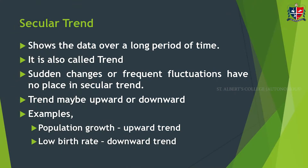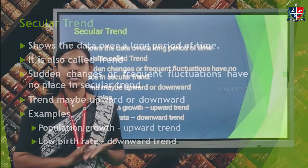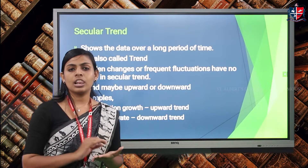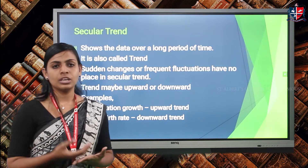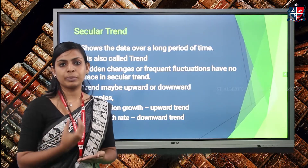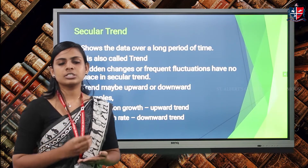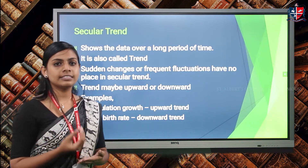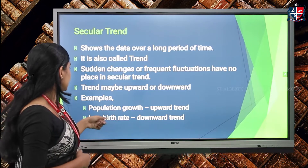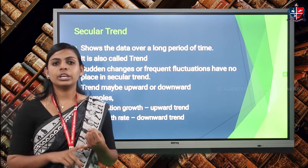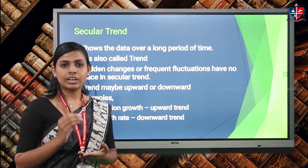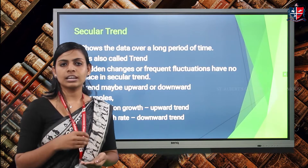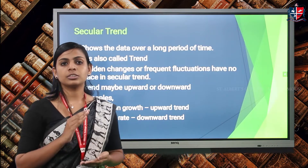The first component is secular trend, also known as long-term trend. Secular trend is measured over a long period of time — over a period of ten years, five years, or even more. Since it is measured over a long period, small fluctuations are not reflected in secular trend. Examples of secular trend include population growth or low birth rate.